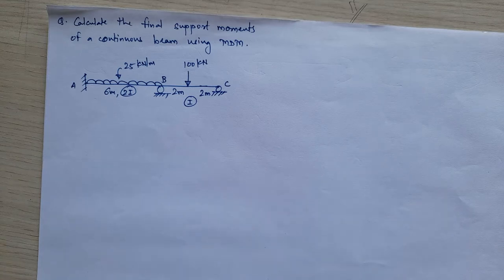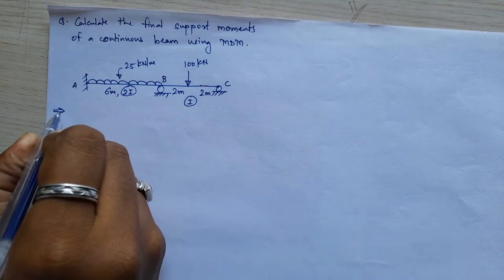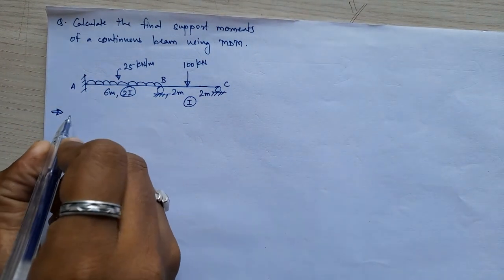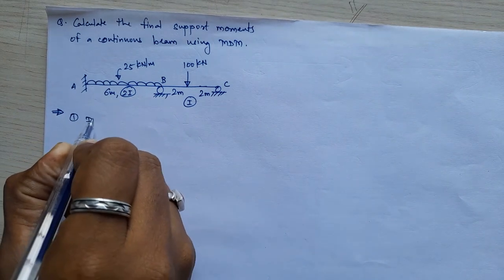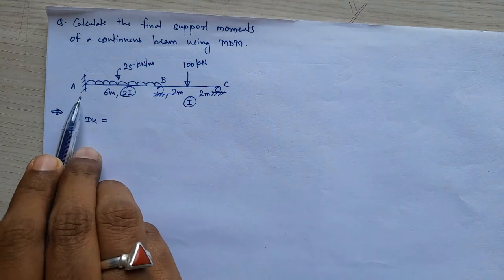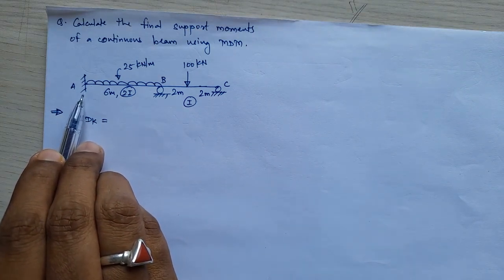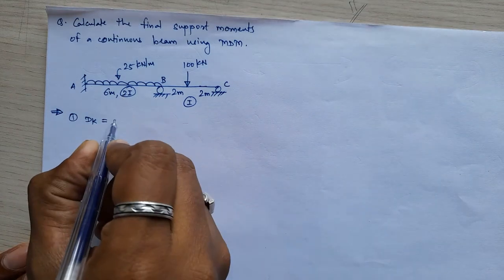The first step: this is again a stiffness method, also called a displacement method. So firstly, you have to calculate the value of DK here. For the support condition, A is fixed, so the DK value will become 0. Theta B and theta C will be our two DK values, giving a total DK equal to 2 — that is theta B and theta C, assuming clockwise rotations initially.